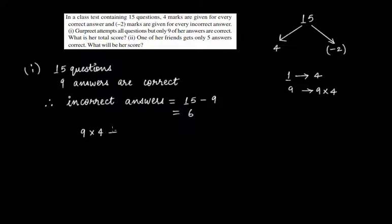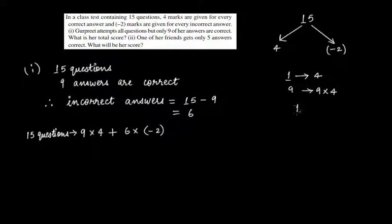We are counting for all 15 questions. So 9 times 4 is for the correct answers. For the incorrect ones, she attempted 6 questions incorrectly, so 6 times minus 2 — because for one question attempted incorrectly she will be awarded minus 2 marks, therefore for 6 questions attempted incorrectly she will be awarded 6 times minus 2.